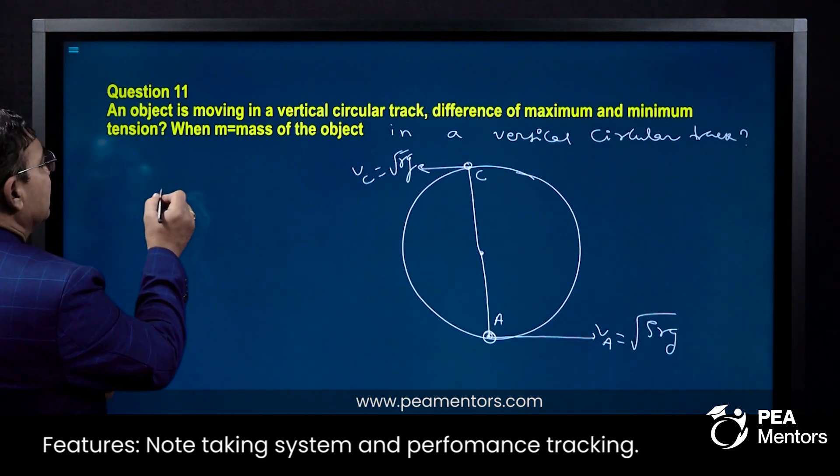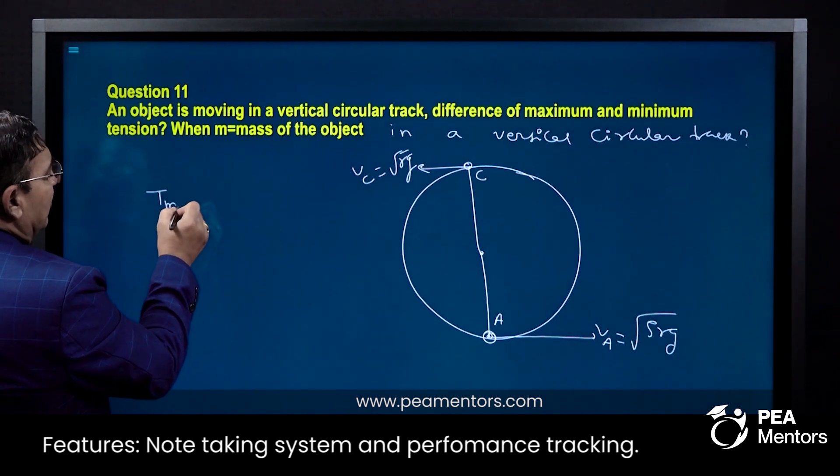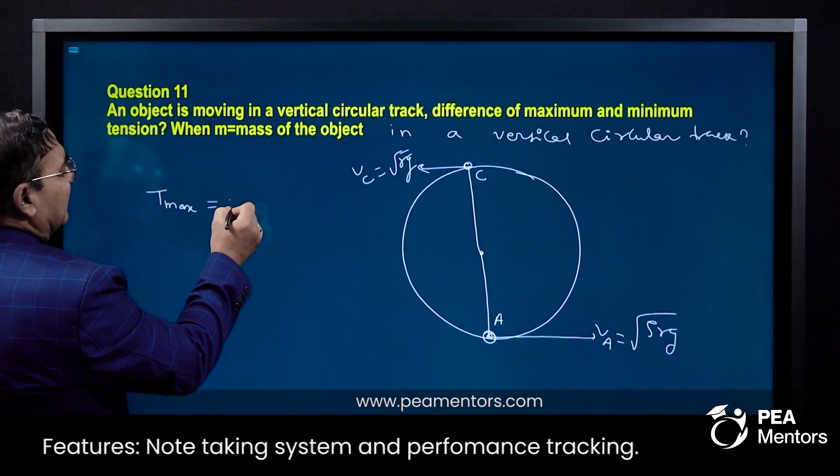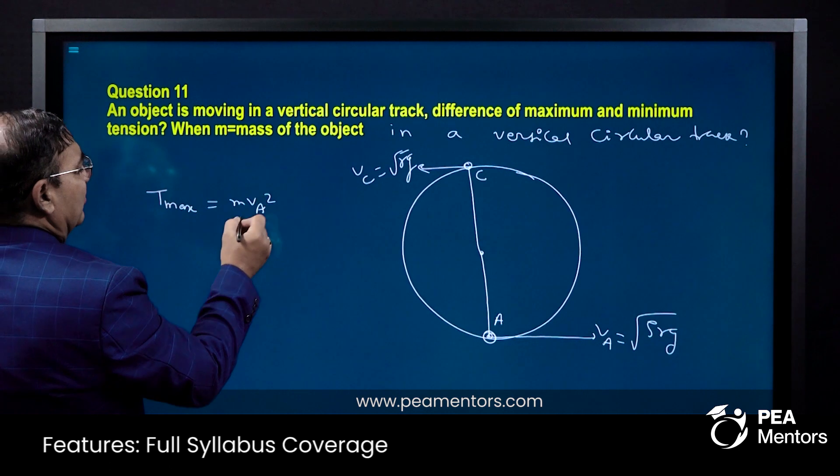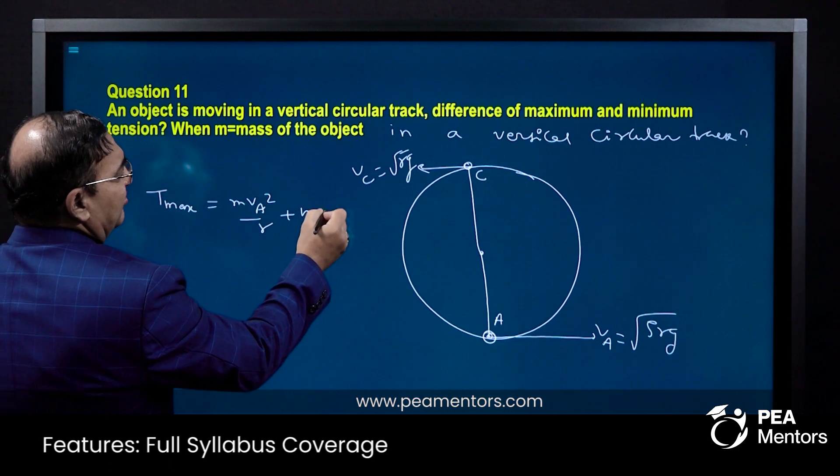We know the formula of tension maximum. In the theory we have discussed, tension maximum is M VA squared by R plus MG. This is the formula.